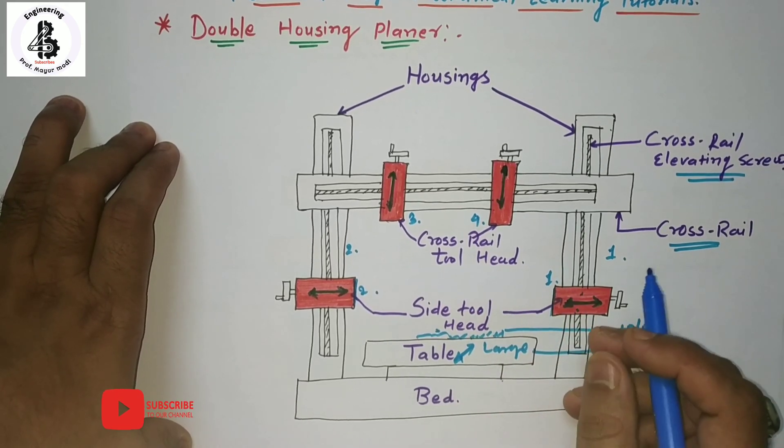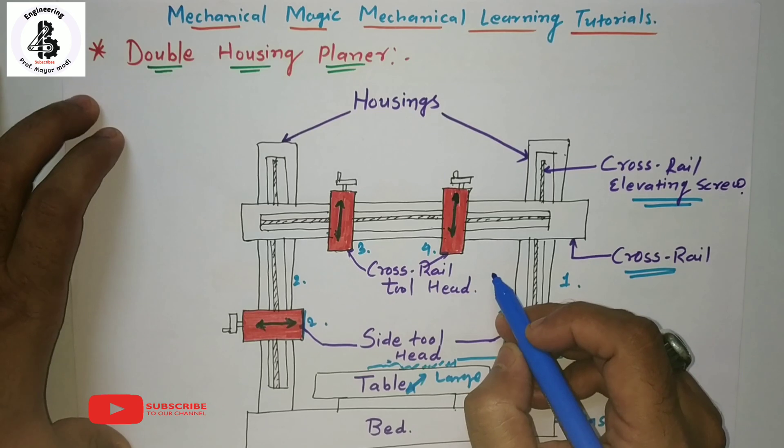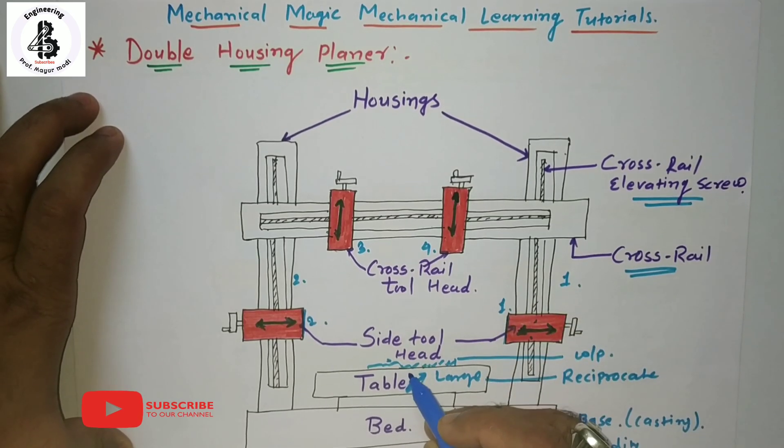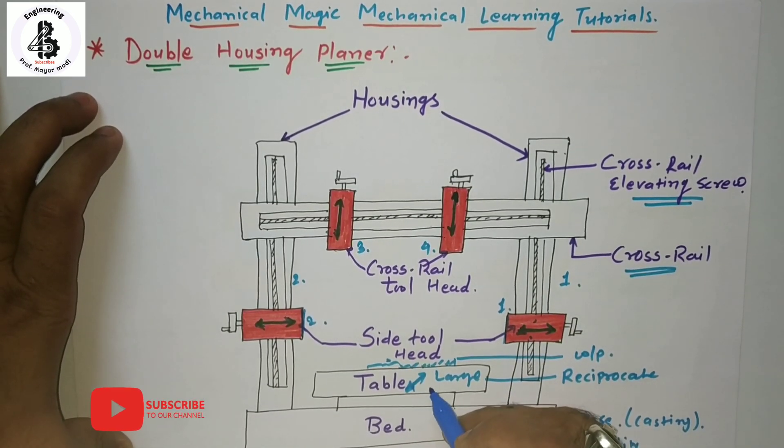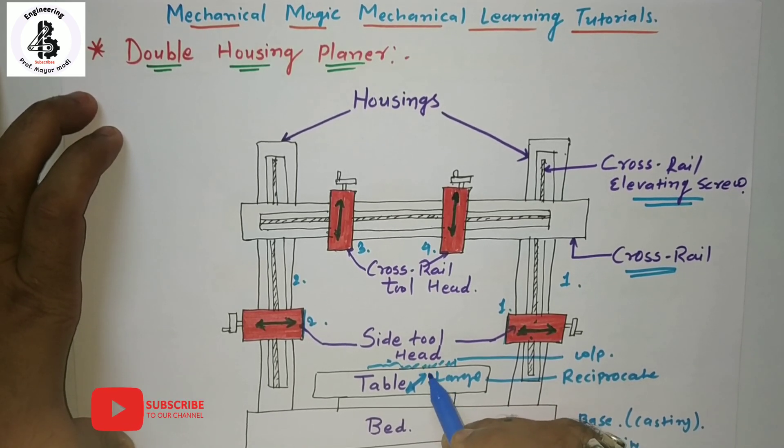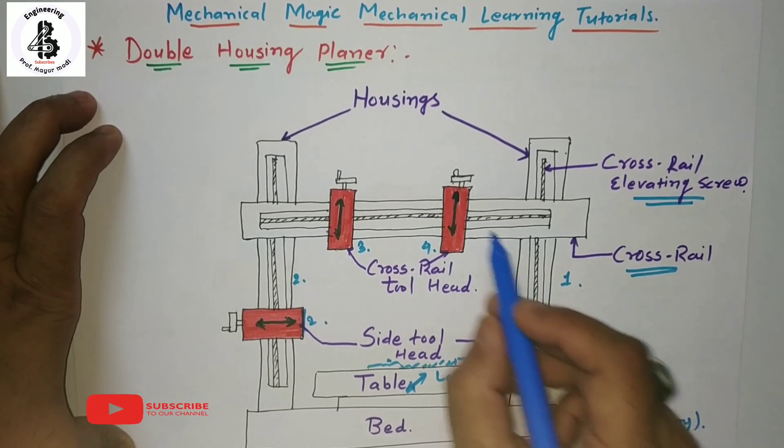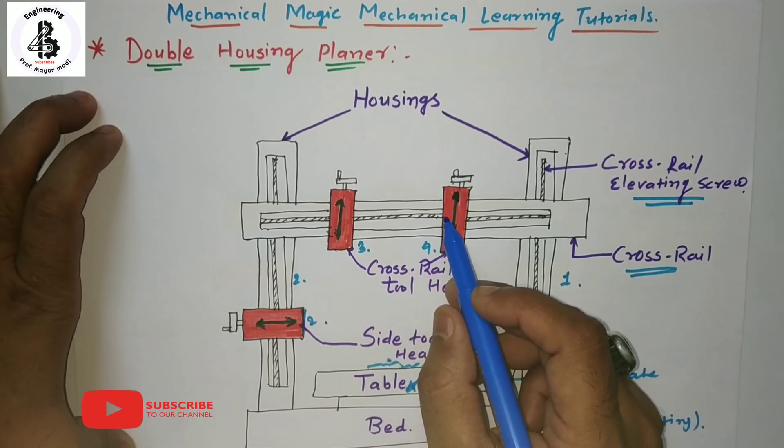So the double housing planner consists of a long heavy bed which is supported onto the table and is being reciprocated. On the other side of the bed near to the center are located two upright housings. The housings support onto the cross rails.